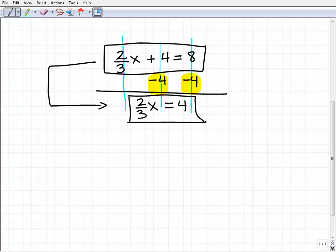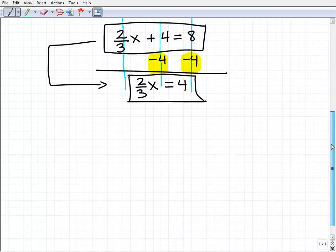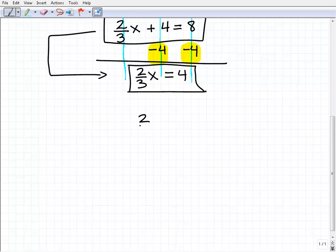All right, so now we're down to two-thirds x equals 4. I'm going to write this down here. Two-thirds x equals 4. So remember, I want to get x equals, and really that's 1x. So how can I take this two-thirds x and just turn that into a 1x? Well, that's real easy. All you have to do is, when you're dealing with a fraction in front of a number, multiply that fraction by its reciprocal.